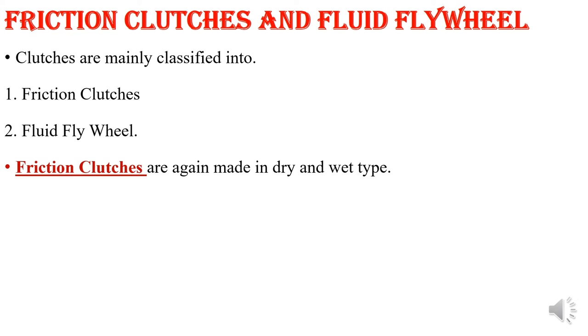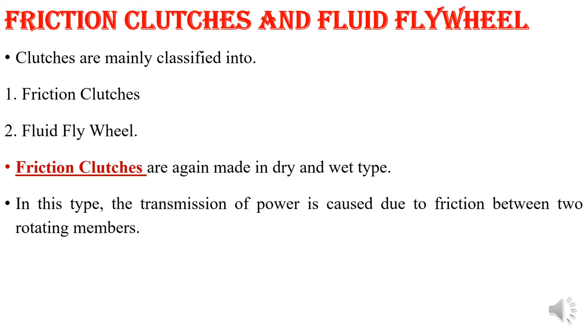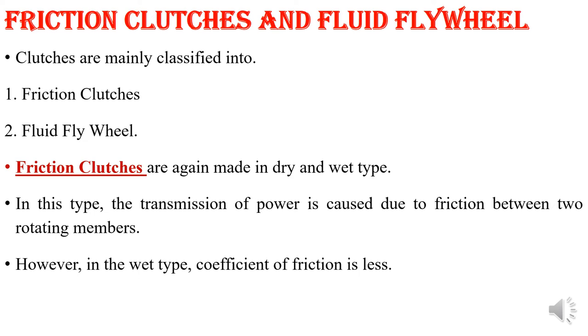Different types of clutches: one is the frictional clutch and the other is the fluid flywheel clutch. In the frictional clutch, we have the dry type and the wet type. Dry type means direct metal-to-metal contact — there is no fluid presence in the clutch; the coefficient of friction should be very high. In the wet type, oil or fluid is present inside the clutch, so the coefficient of friction is very less.